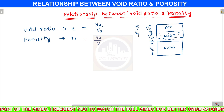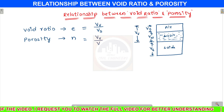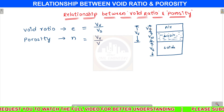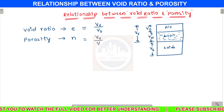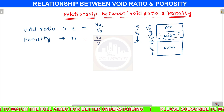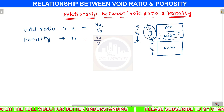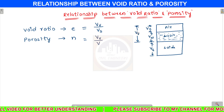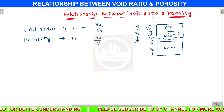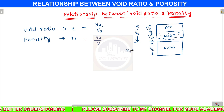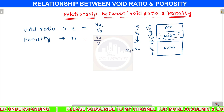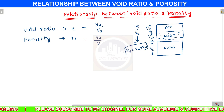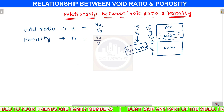The volume of air and volume of water are commonly called the volume of voids, because air and water accumulate in the void spaces present between the solids. Some voids are filled with air and some are filled with water. So the combined volume of air and water is called volume of voids. Therefore, volume of voids equals volume of air plus volume of water.